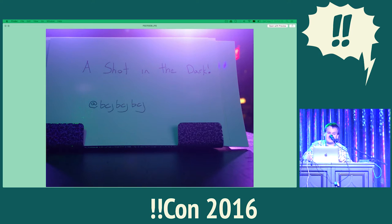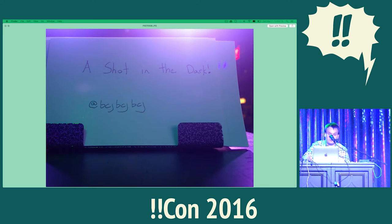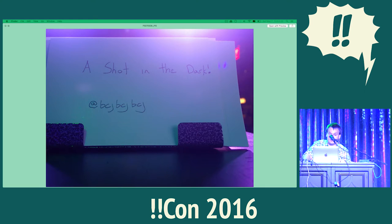I decided to start small, and most cameras start with something called Scene Mode, which is just a bunch of presets for various situations, like a mode for sports, or a mode for food, or a mode for fireworks. And there was one preset called Live Composite, and what it does is it blends a series of photos together. That sounded cool, so I tried it out.